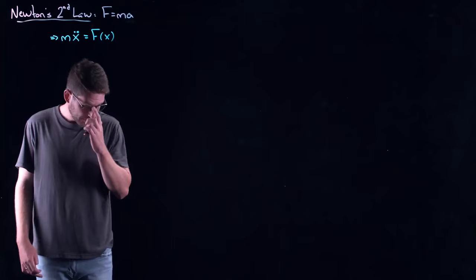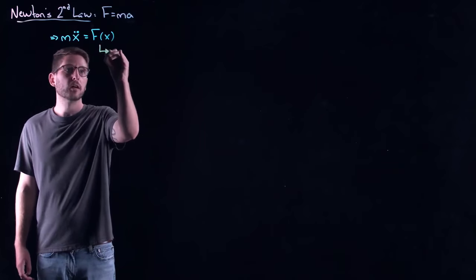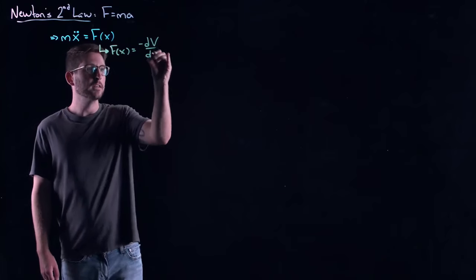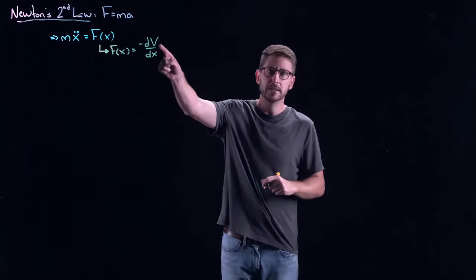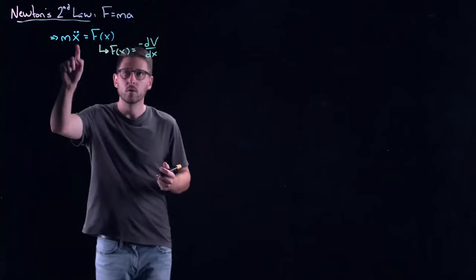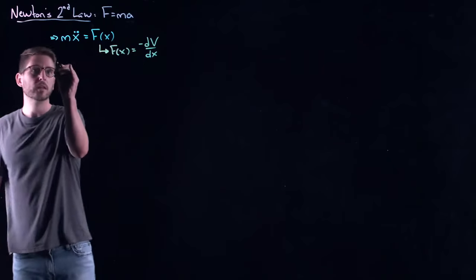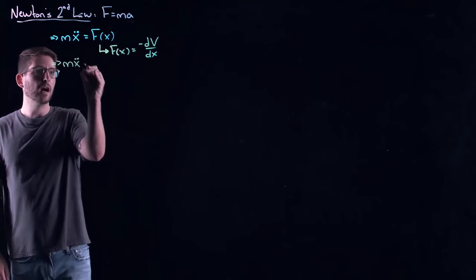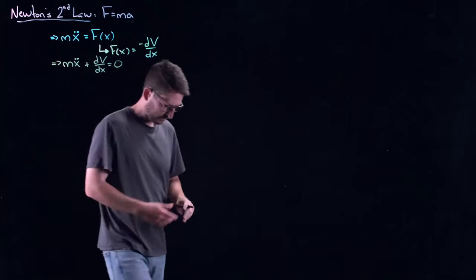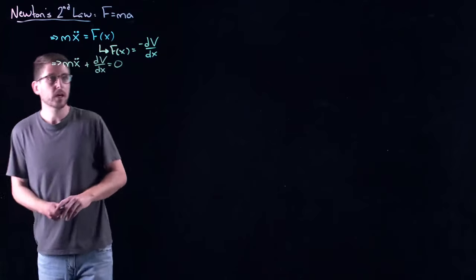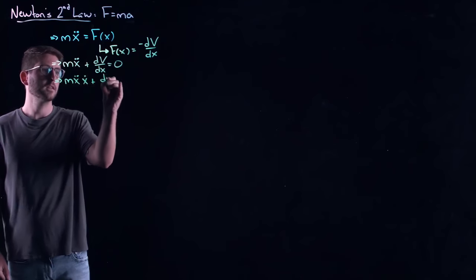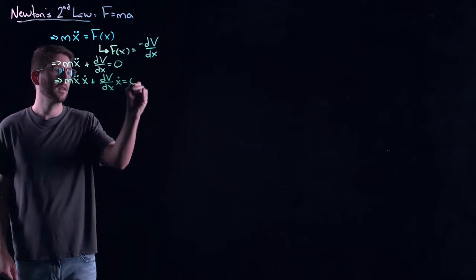For these simple equations, we can show that energy is conserved. We can write the external forcing as the minus derivative of a potential V. So the equation becomes m·x-double-dot plus dV/dx equals zero. If I multiply through by x-dot, I get m·x-double-dot·x-dot plus (dV/dx)·x-dot equals zero.